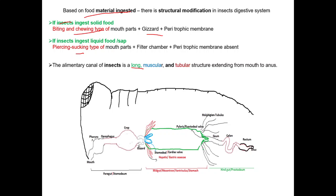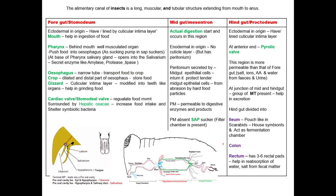The alimentary canal in insects is a long muscular and tubular structure, extended from mouth to the anus. The alimentary canal is divided into three parts: the anterior one is foregut or stomodeum, the middle one is midgut or mesenteron, and the posterior one is hindgut or proctodeum.